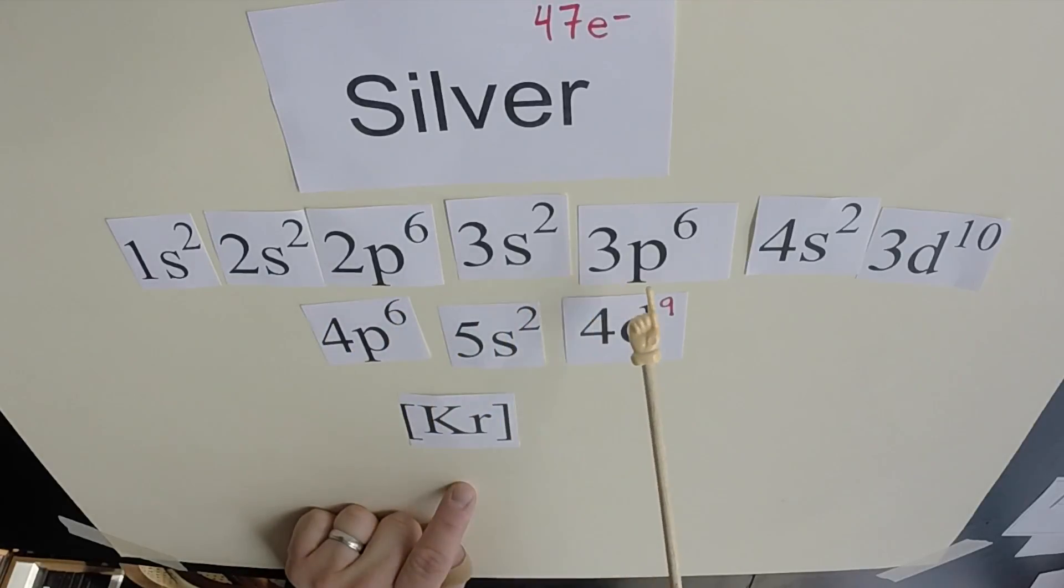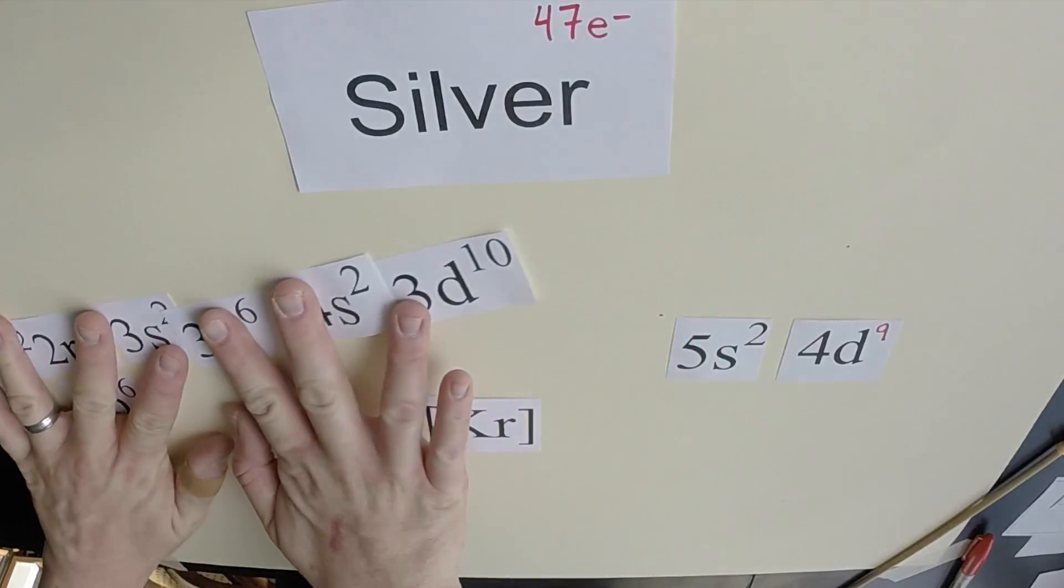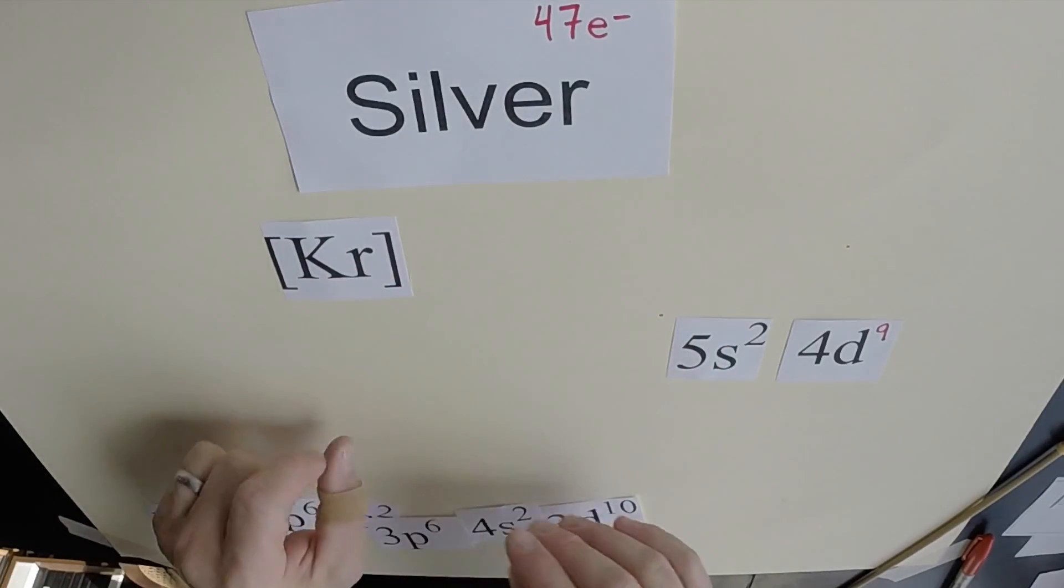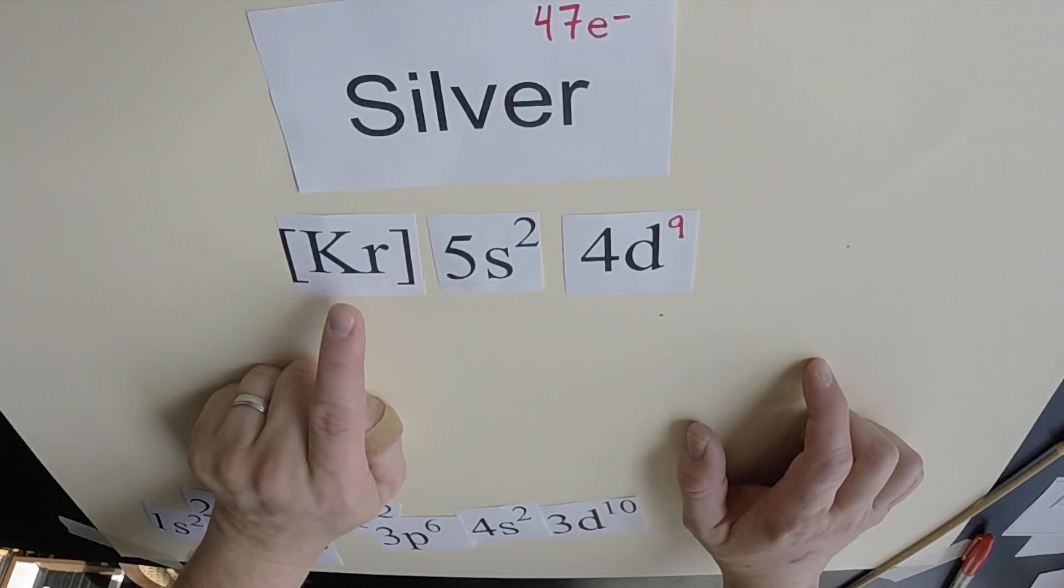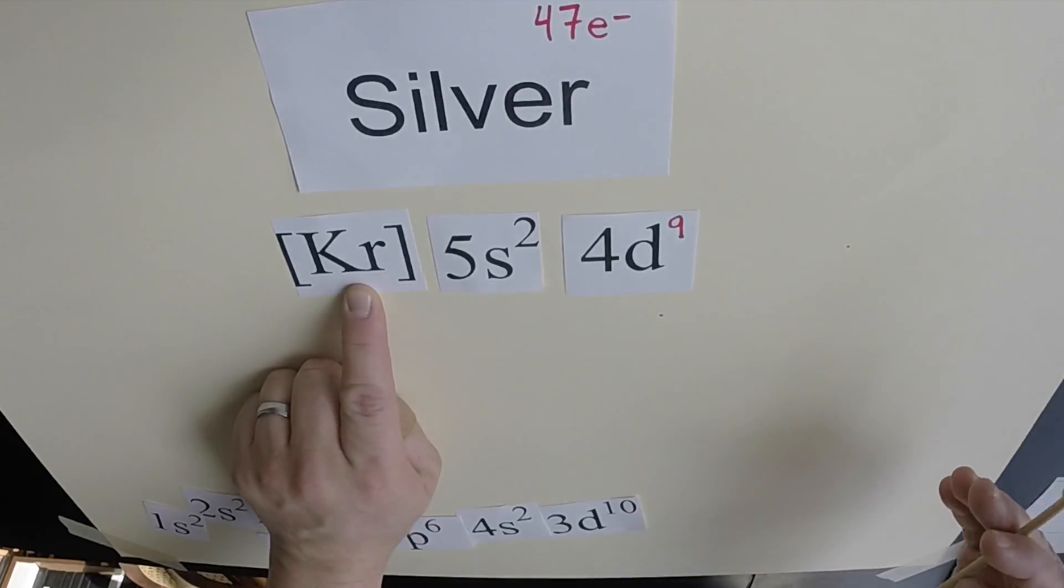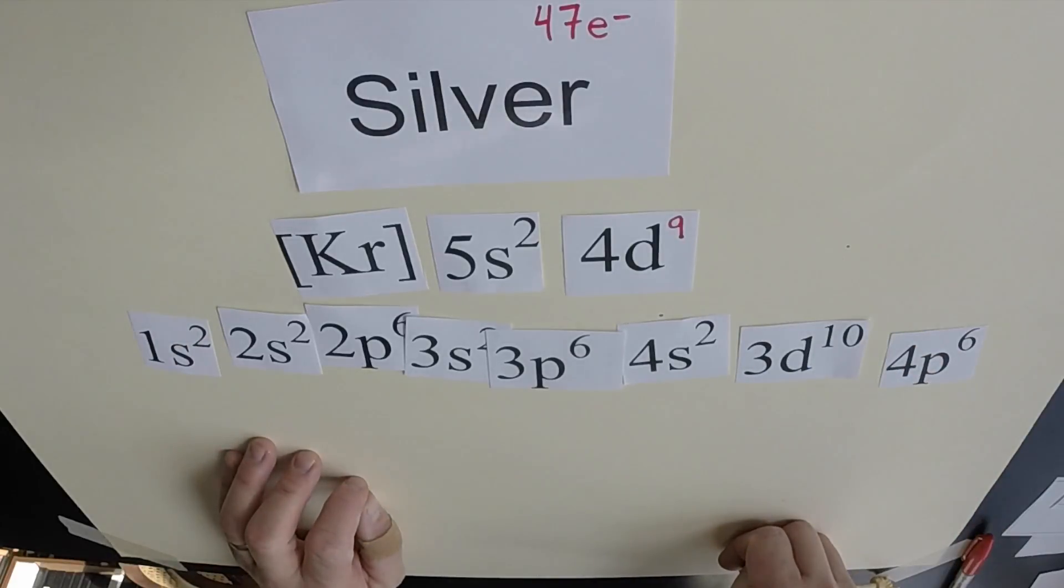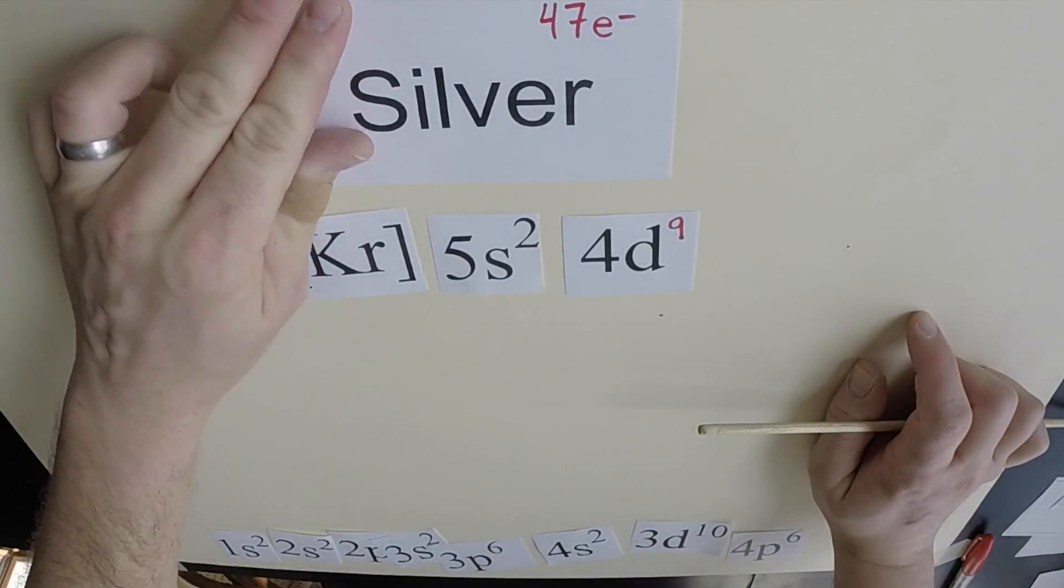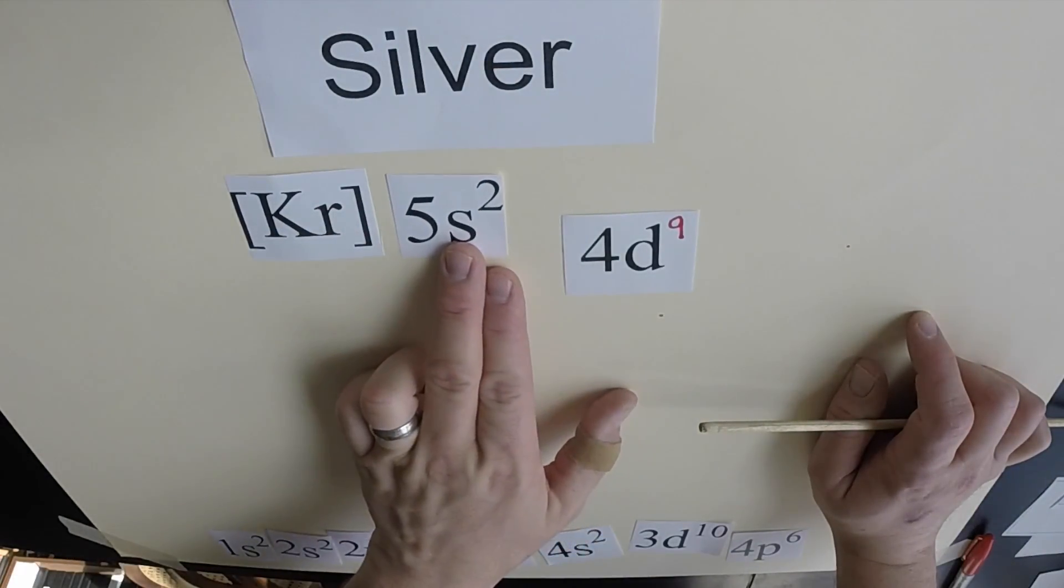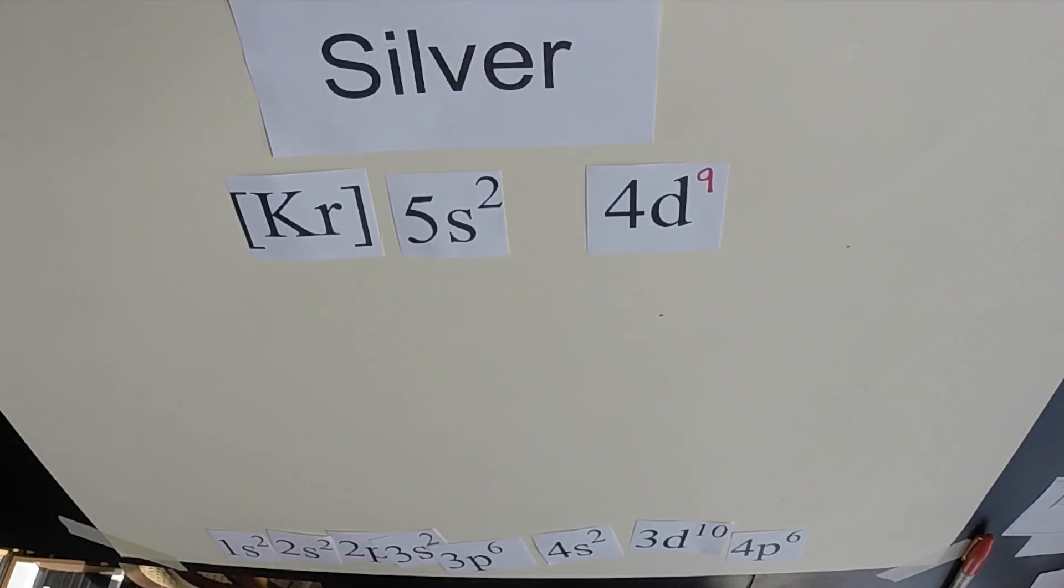1s, 2s, 2p, 3s, 3p, 4s, 3d, 4p. So what we'll do is we'll replace all of this in the electron configuration with the symbol Kr in brackets. Now, again, silver is not krypton. The symbol is meant to represent all these inner energy levels of electrons within the silver atom. So the noble gas shortcut configuration for silver: [Kr], 5s2, 4d9. That's our noble gas shortcut for silver.